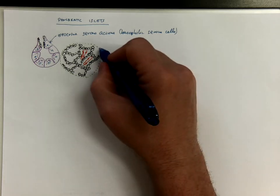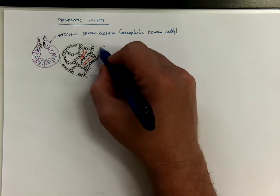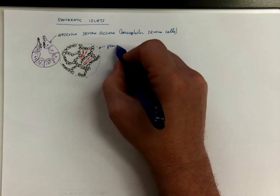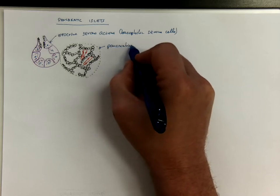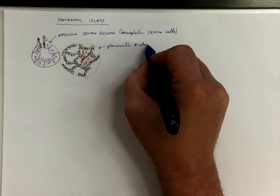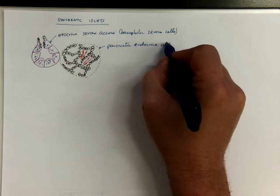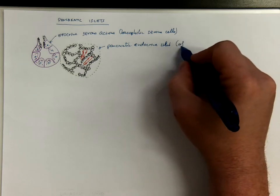So the whole structure is called islet of Langerhans or pancreatic endocrine islet. There is an eponym, islet of Langerhans.